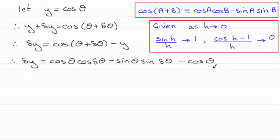Now the next thing I do is just factorize the first term here and the last term here. I can see that cosine theta is a common factor. So I have delta y equals, and pulling out cosine of theta as a common factor, I have the cosine of delta theta minus 1. And then we've got this second term, minus sine theta, sine delta theta.